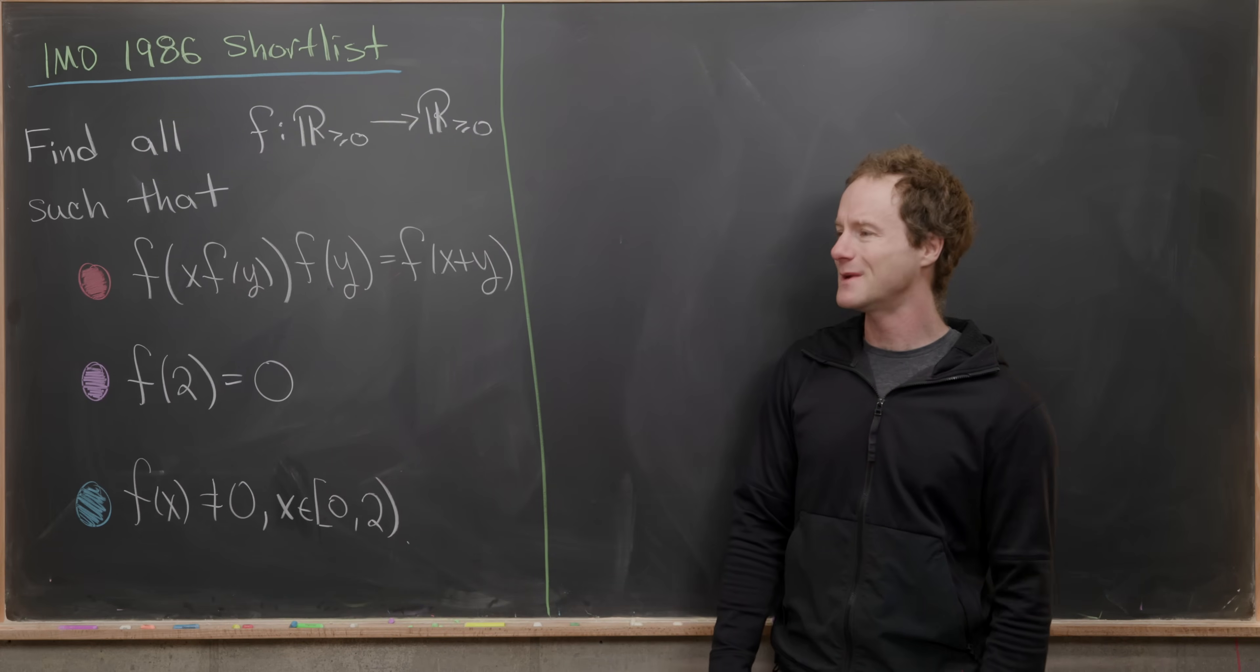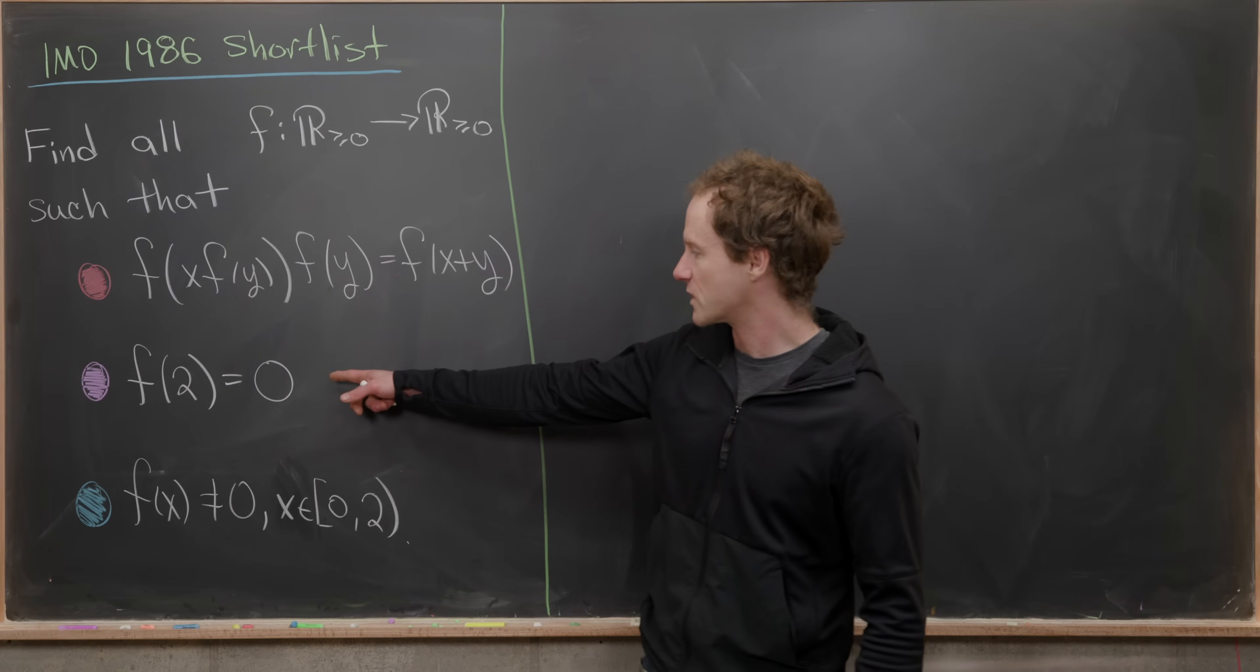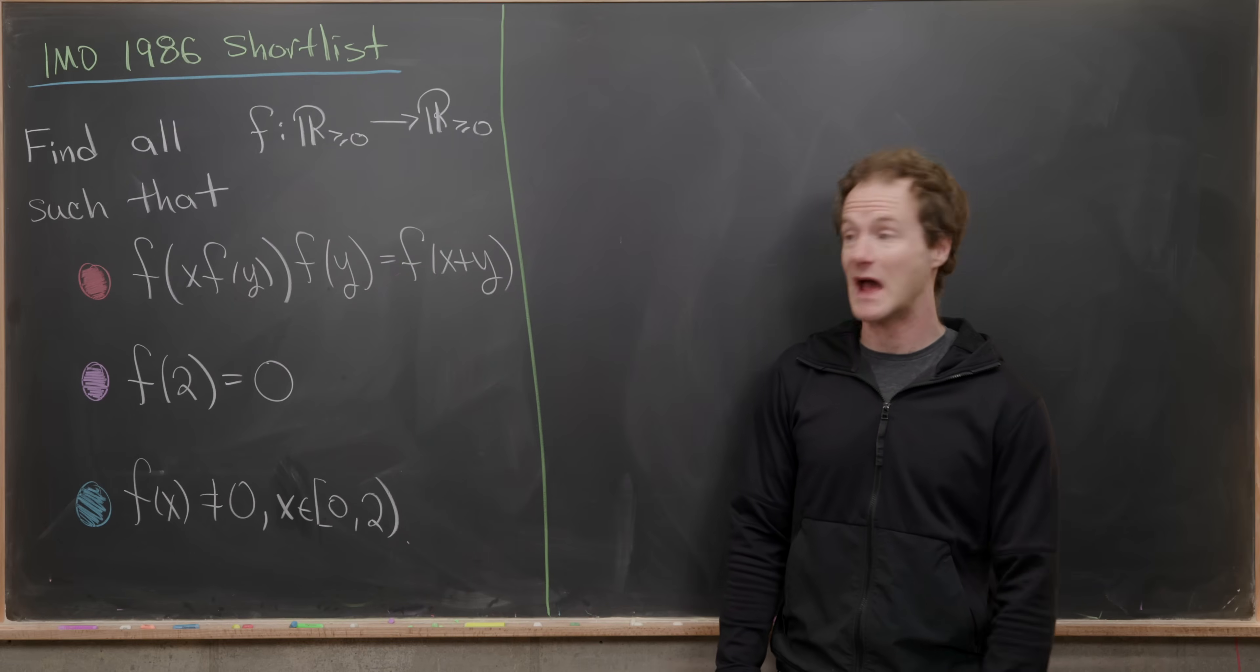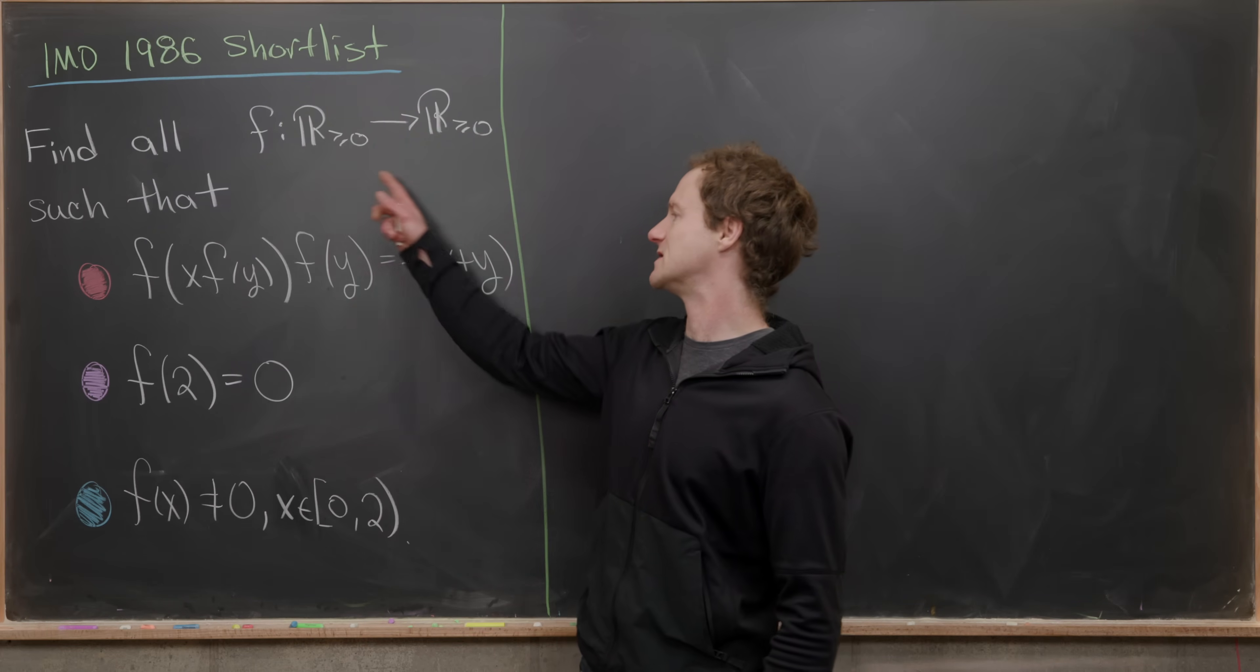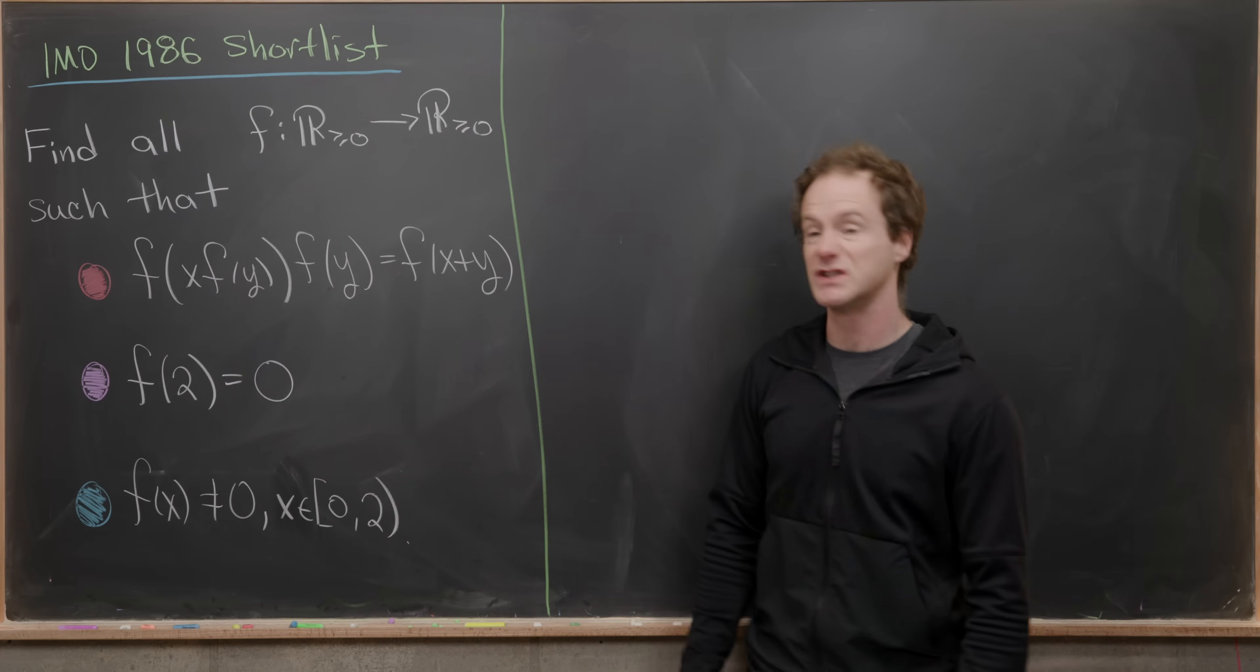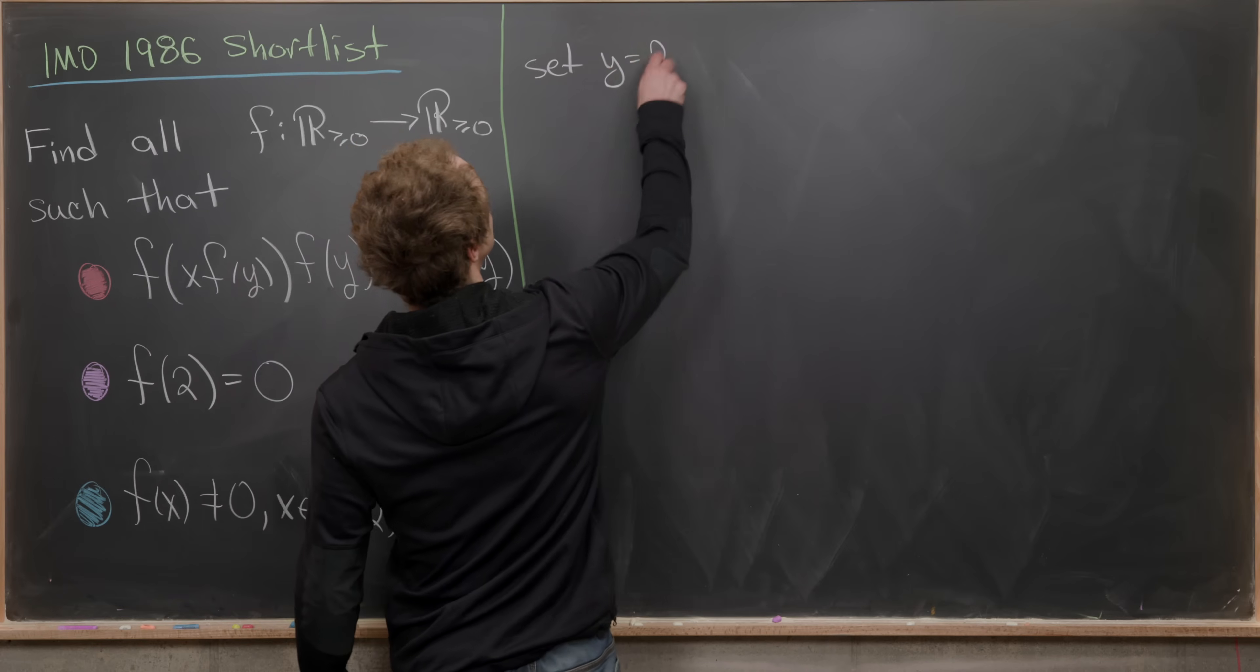I'm not really going to give any hints. We're just going to jump into the solution. We really want to leverage this second purple dot condition first. That's because we already know a value for the function: f(2) = 0. So we'll probably want to somehow introduce f(2) into this guy right here. That's actually not super hard to do. If y equals 2, then we're good to go. So let's maybe set y equal to 2.